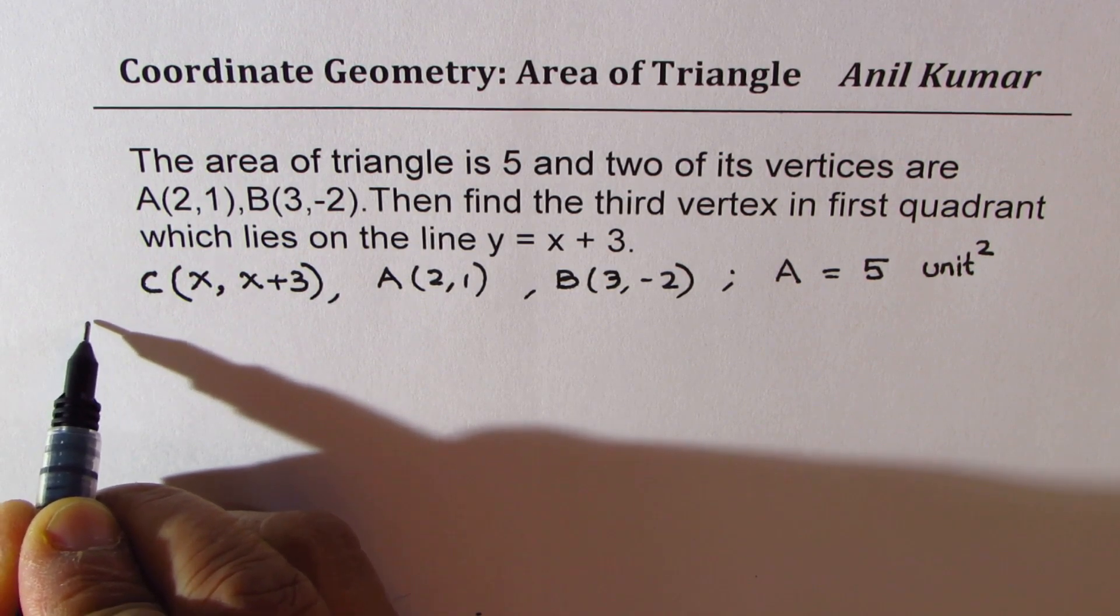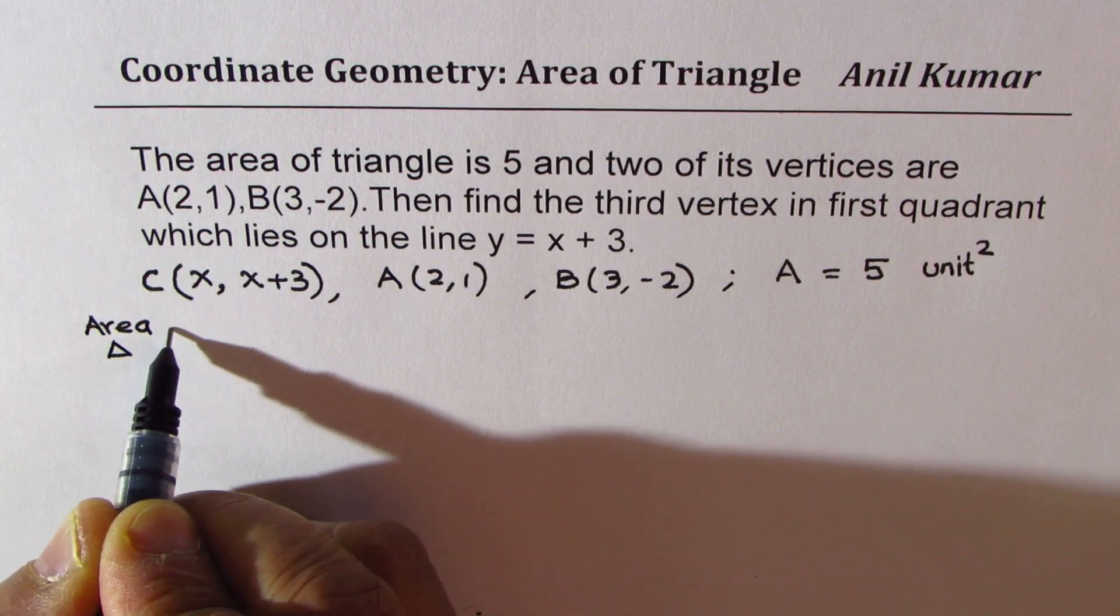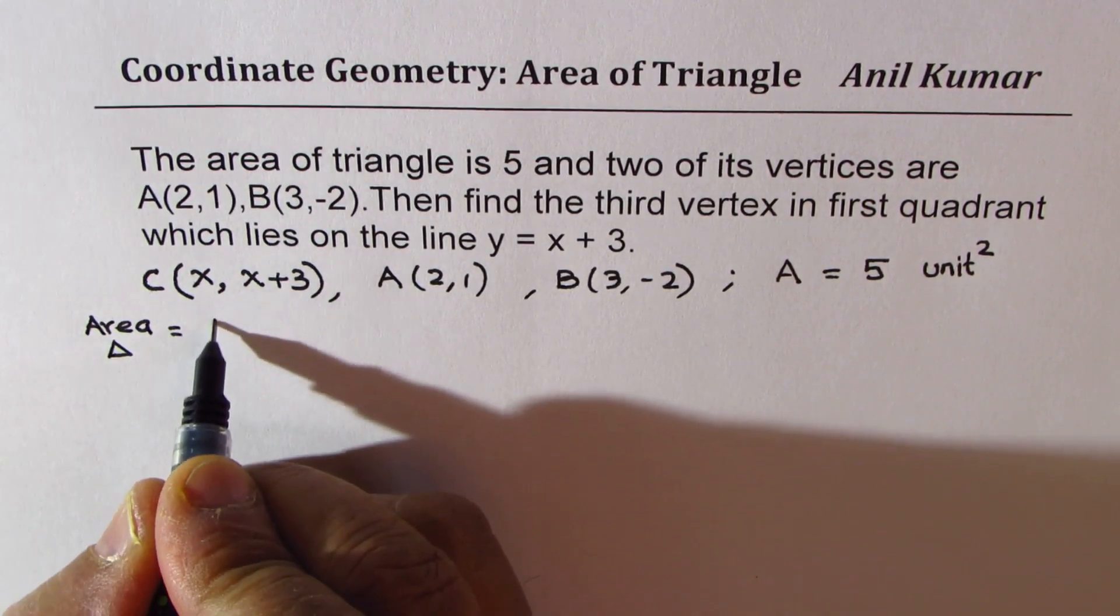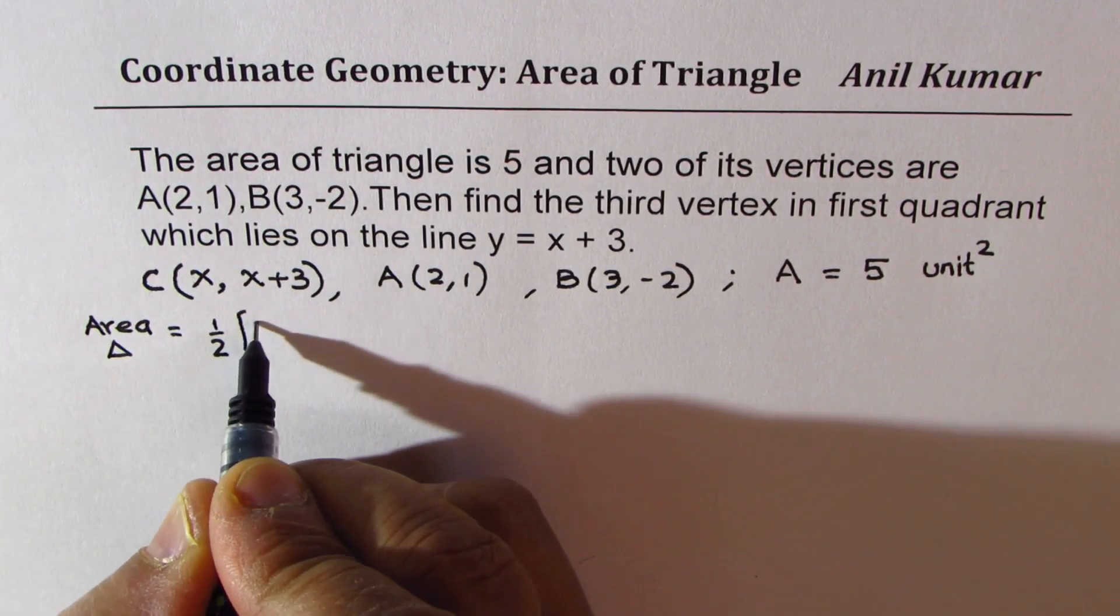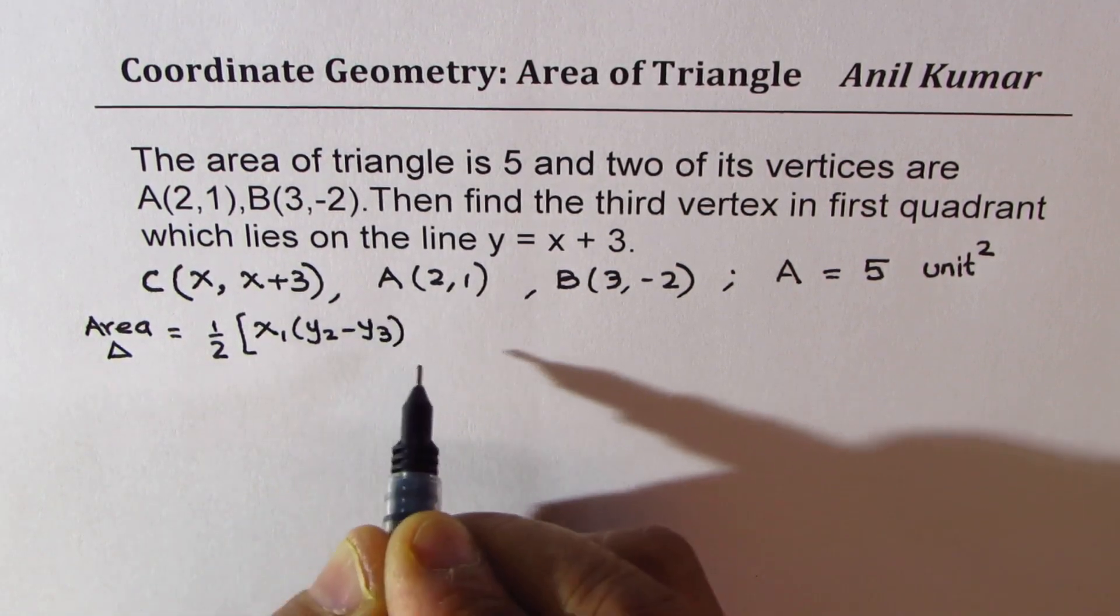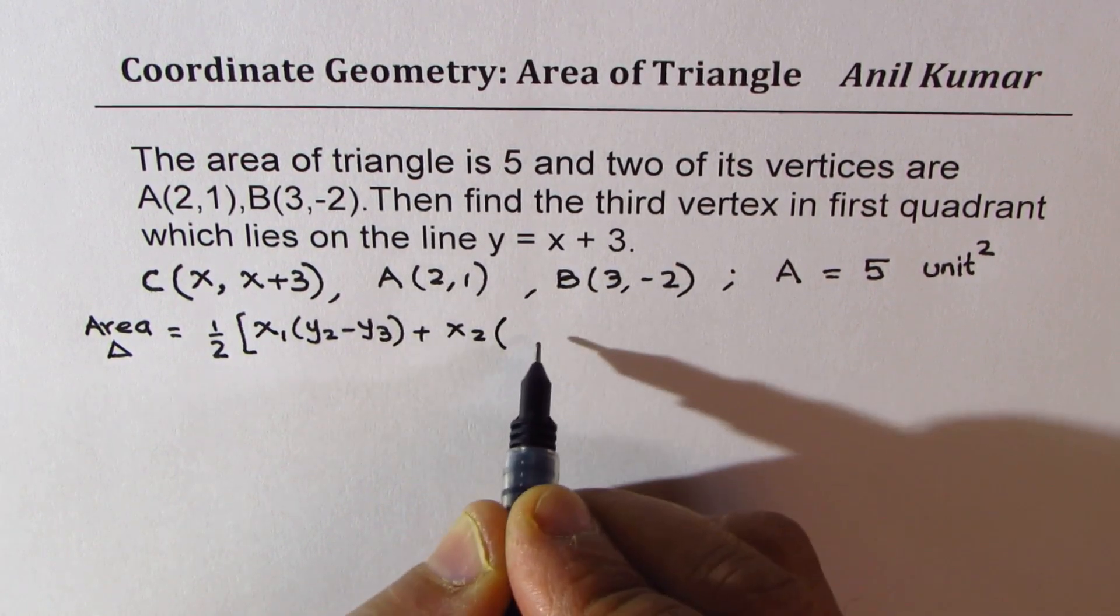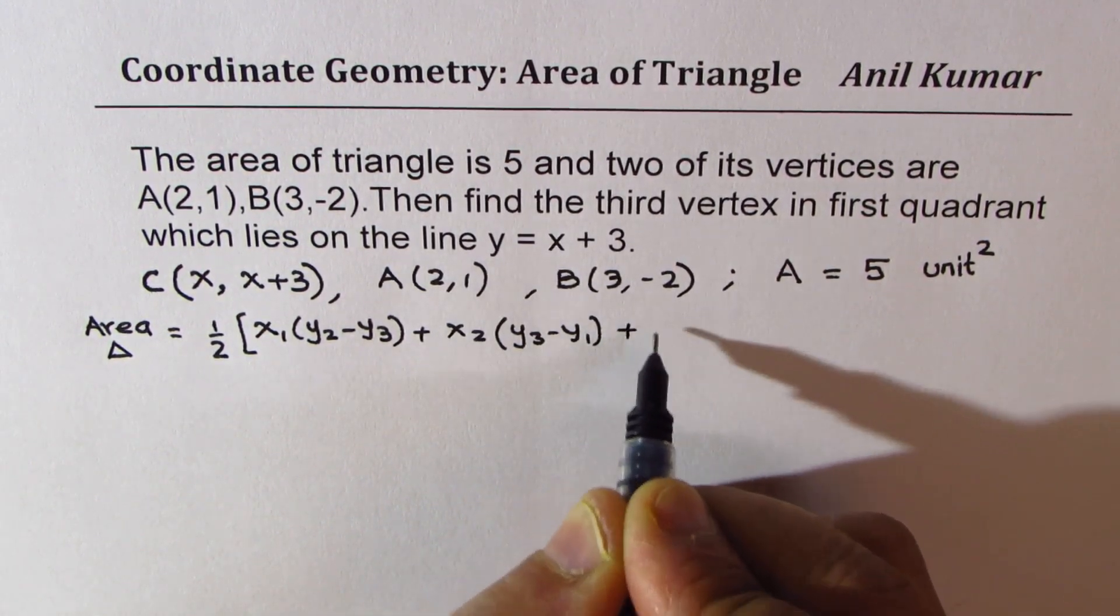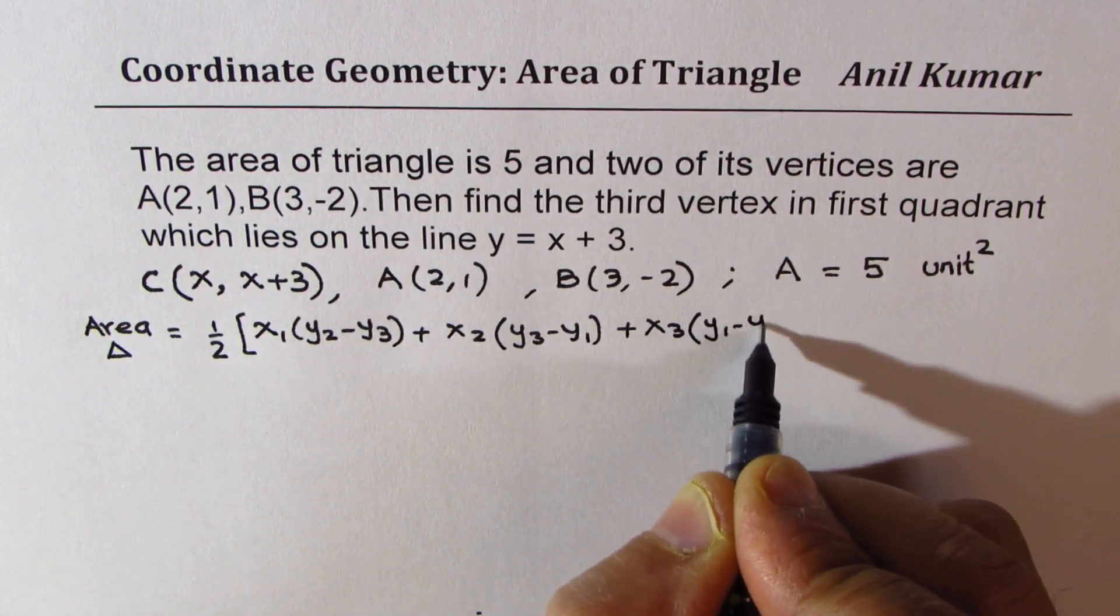The formula is that area of a triangle can be written in terms of these coordinates also and is half of x₁(y₂ - y₃) + x₂(y₃ - y₁) + x₃(y₁ - y₂).